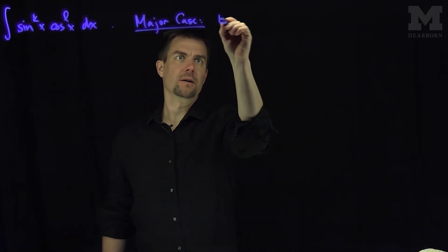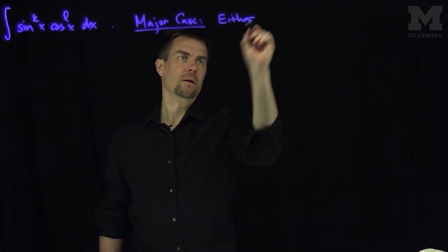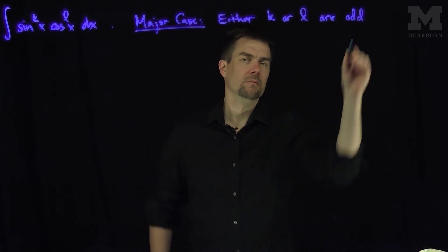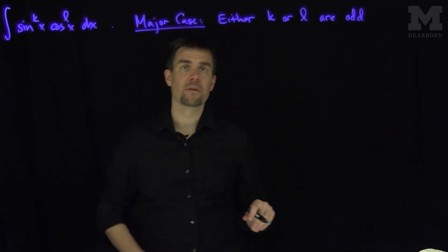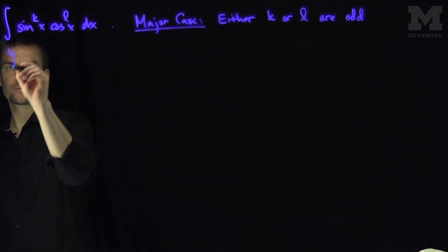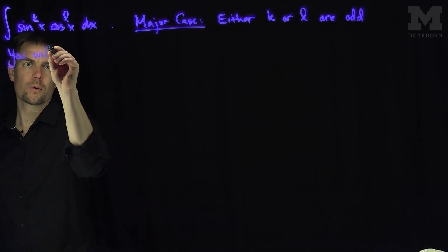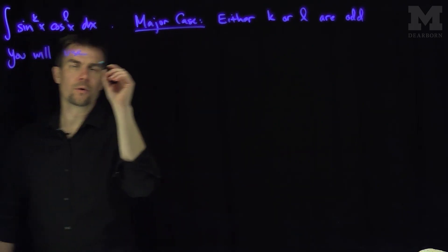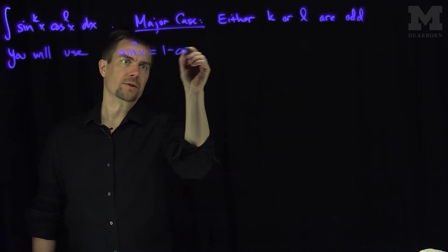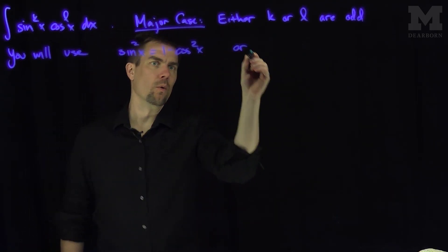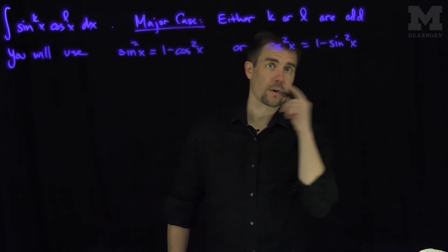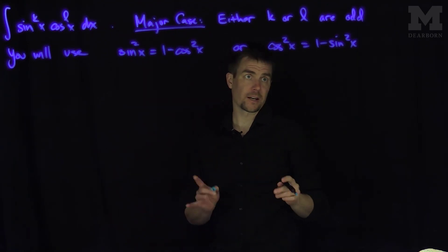The major case is when either k or l are odd — like 1, 3, 5, 7, etc. In this case, we'll use one of two Pythagorean identities: either that sine squared of x equals 1 minus cosine squared of x, or that cosine squared of x equals 1 minus sine squared of x.